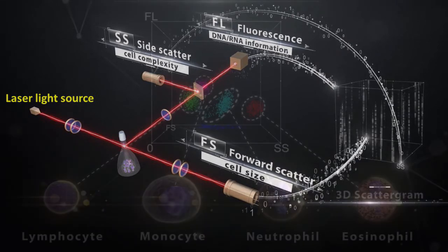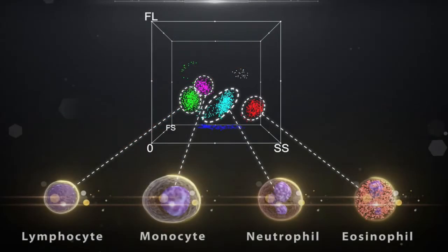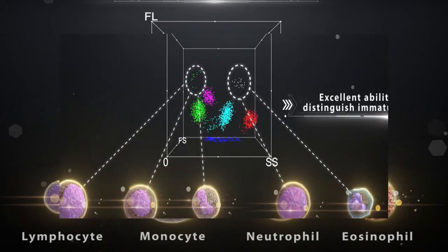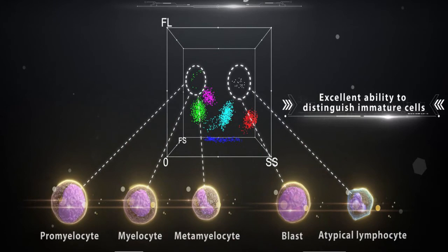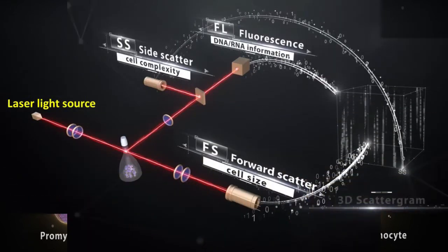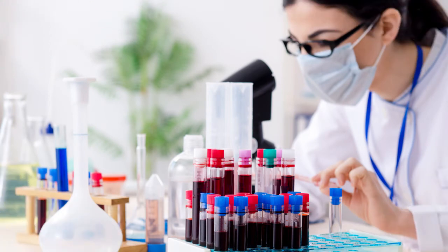All WBC cells are plotted based on their cell size, granularity, and nuclear materials. Immature granulocytes such as promyelocytes, myelocytes, and metamyelocytes, as well as high fluorescent cell populations such as blast cells and atypical lymphocytes, are also plotted in this scattergram. The 3D scattergrams, generated with cellular information including size, complexity, and DNA/RNA data, help clinical experts identify and differentiate cell populations — particularly abnormal clusters undetected by other technologies.